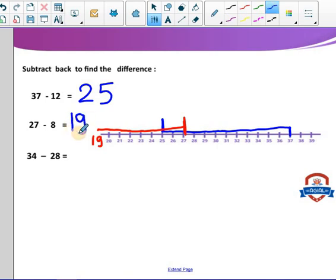34 minus 28. Here we count on to find the difference between 34 and 28. We count on. We start with 28 to reach 34. Here we have 28. After 28: 1, 2, 3, 4, 5, 6. So we count how many numbers to reach from 28 to reach 34. Count 6. So the result here will be 6. So the difference between 34 and 28 will be 6.